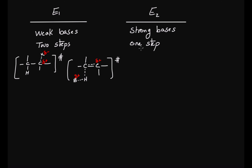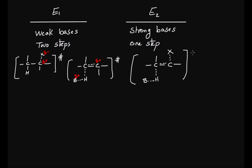For the E2 mechanism, since it happens in one step, there is only one transition state. All bond making and bond breaking happen simultaneously: bond breaking between the halogen and carbon, bond breaking between the carbon and hydrogen, bond making between the base and hydrogen, and formation of the pi bond. Since E2 favors strong bases — which are usually negatively charged — the negative charge on the base starts to disappear and a negative charge on the halogen starts to appear.